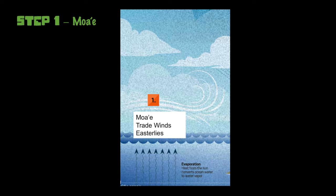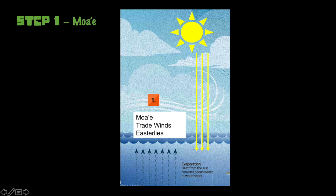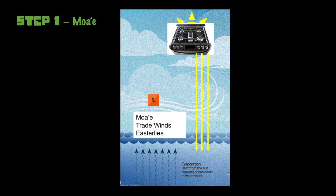As you can see from the description on the diagram, heat from the sun converts ocean water to water vapor, represented by these little squiggly lines coming up off of the ocean. This is similar to using heat from a stove to boil water in a pot — the water goes from liquid to gas, also known as water vapor or steam. Imagine the stove is the sun and the pot of water is the Pacific Ocean. That can create a lot of water vapor. The salt does get left behind in the ocean though. The Moa'e are like a big conveyor belt that brings evaporated fresh water to our islands.